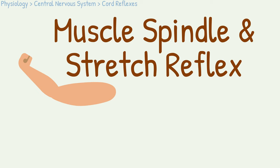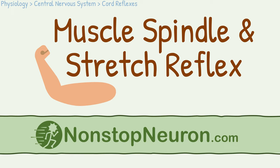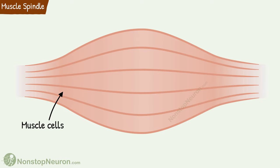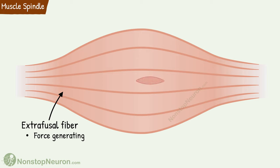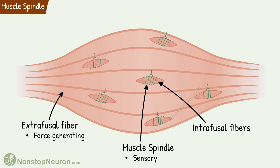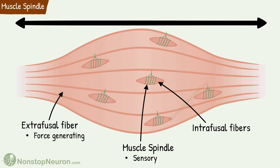Hello, in this video we will talk about muscle spindle and stretch reflex. Welcome back to nonstop neuron.com, where learning medical concepts is as easy as watching cartoons. Let's get started with the muscle spindle first. In the video on physiological anatomy of the skeletal muscle, we studied muscle cells, also called muscle fibers. These cells are the main force generating cells, also referred to as extrafusal fibers. Among them are special types of other muscle cells referred to as intrafusal fibers. These fibers, combined with their nerve supply, form a complex called muscle spindle — a sensory structure. Such spindles are distributed throughout the belly of the muscle and send information about muscle length and changes in the length.